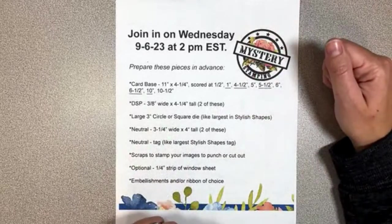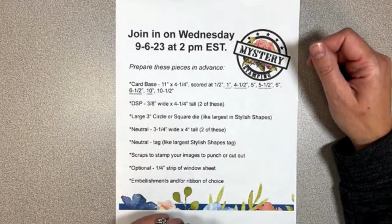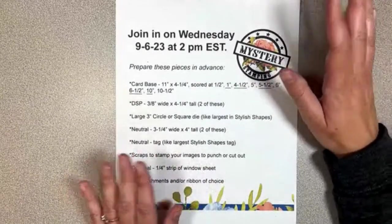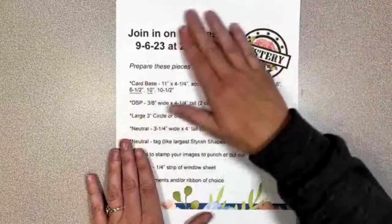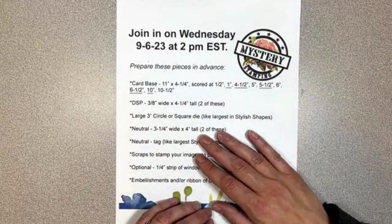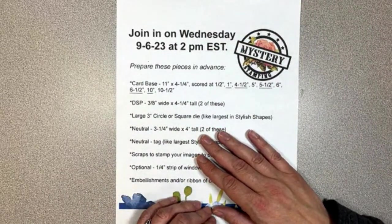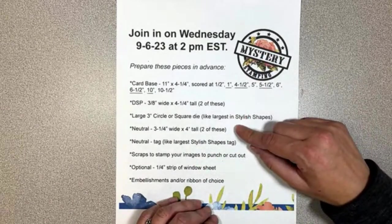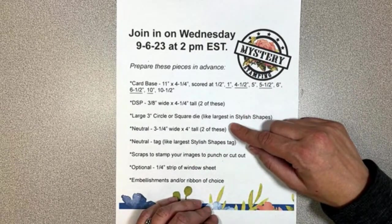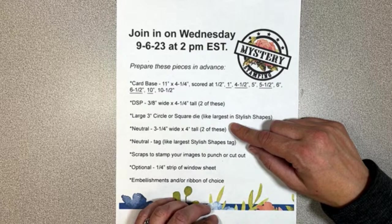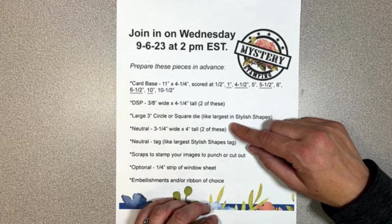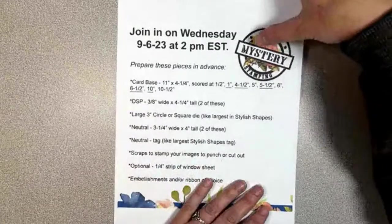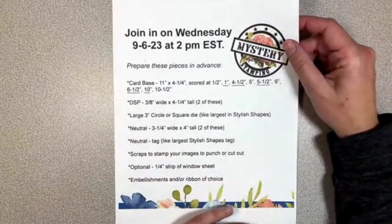We do mystery stamping every single Wednesday. Almost every single Wednesday. I did take a break last week, but we're back with a bang. This one is super fun, and you can get the directions and the dimensions emailed to you if you join my email list in the description there, and then also this is posted in our Facebook group at Stamp with Delight. We are also live on YouTube at Delight of My Art, so thank you so much for tuning in. Let's go ahead and dive right in.